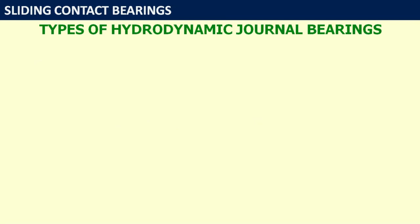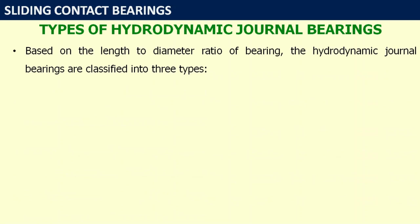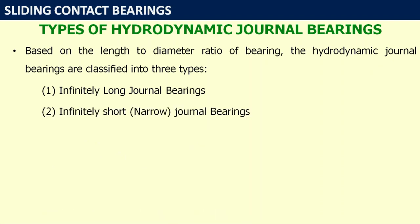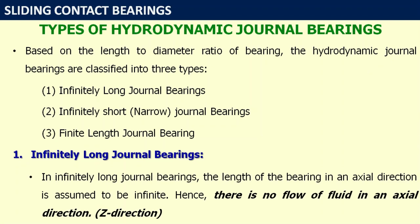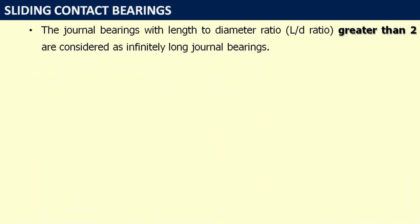Now let us see different types of hydrodynamic journal bearings. Based on the length-to-diameter ratio, hydrodynamic journal bearings are classified into three types: first, infinitely long journal bearings; second, infinitely short (also called narrow) journal bearings; and third, finite length journal bearings. In infinitely long journal bearings, the length in the axial direction is assumed infinite, so there is no flow in the axial (z) direction. Journal bearings with L/D ratio greater than 2 are considered infinitely long.